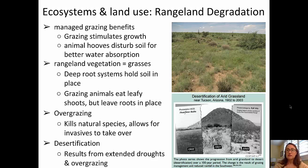Rangelands are also under attack from degradation. Rangelands that are managed properly have a situation where grazing actually stimulates plant growth — animals' hooves disturb the soil and make for better water absorption, which encourages plant growth. Those grasses have very deep root systems that hold the soil in place and are resistant to drought. When grazed on, the grazing animals eat the leafy shoots but leave the roots in place. The danger is that overgrazing will kill natural species, which can allow invasive species to come in and take over.